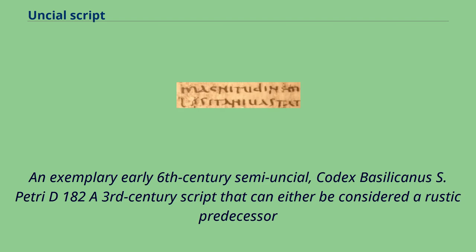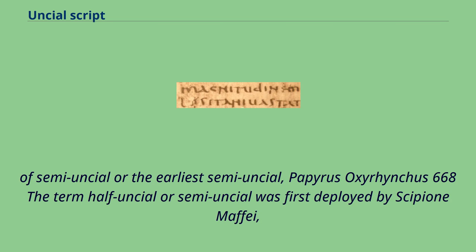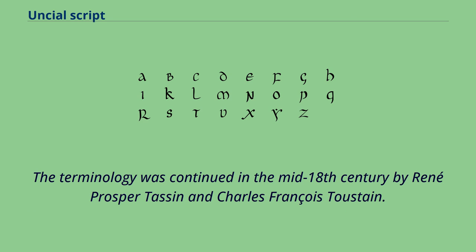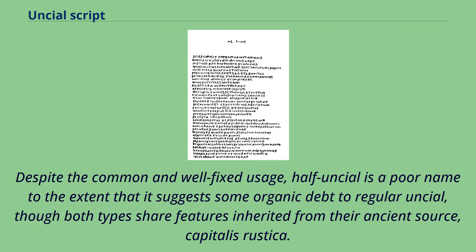An exemplary early 6th century semi-uncial is the Codex Basilicanus S. Petri D. 182, alongside a 3rd century script that can either be considered a rustic predecessor of semi-uncial or the earliest semi-uncial — Papyrus Oxyrhynchus 668. The term half-uncial or semi-uncial was first deployed by Scipione Maffei in Historia Diplomatica. He used it to distinguish what seemed like a cut-down version of Uncial in the famous Codex Basilicanus of Hilary, which contained sections in each of the two types of script. The terminology was continued in the mid-18th century by René Prosper Tassin and Charles-François Toustain. Despite the common and well-fixed usage, half-uncial is a poor name to the extent that it suggests some organic debt to regular Uncial, though both types share features inherited from their ancient source, Kapitalis Rustica.